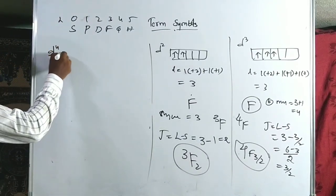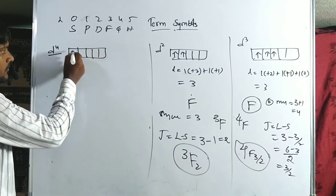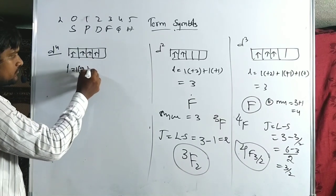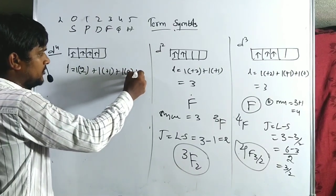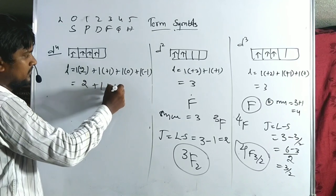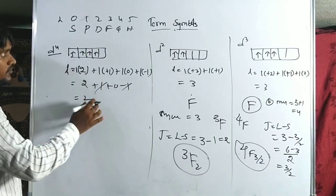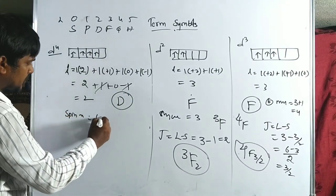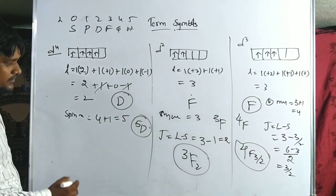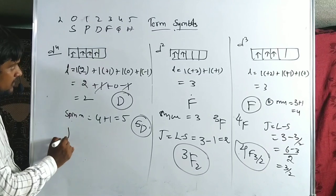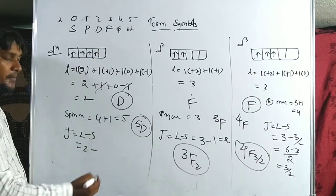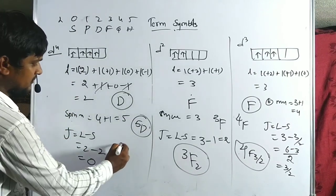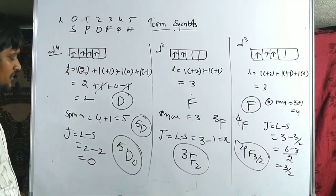For D4: electrons at +2, +1, 0, −1. L = 2+1+0−1 = 2, term is D. Multiplicity = 4+1 = 5, giving 5D. Less than half-filled, J = L−S = 2−2 = 0. The ground term symbol for D4 is 5D0.